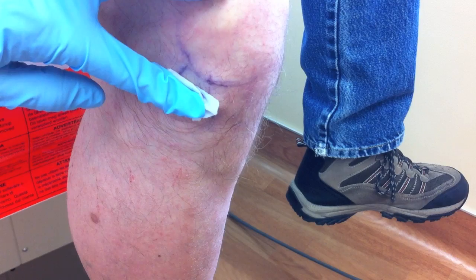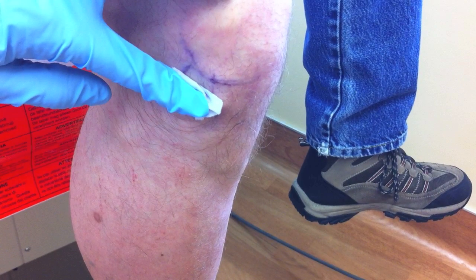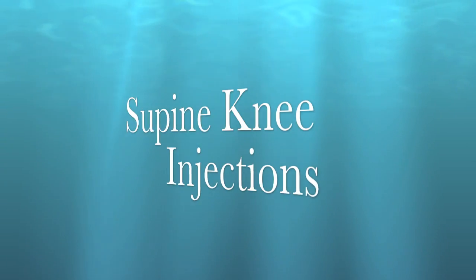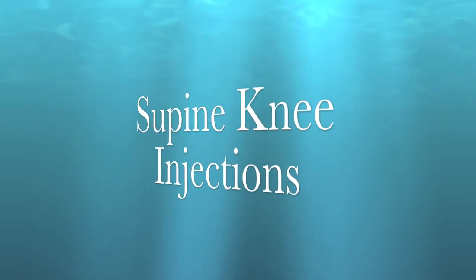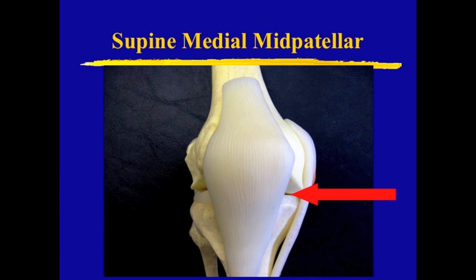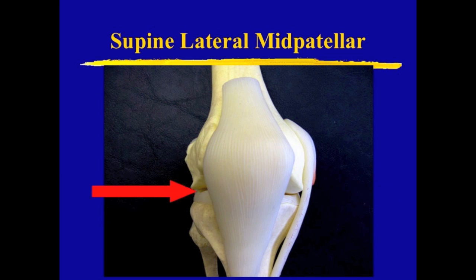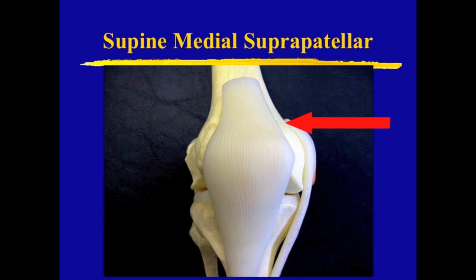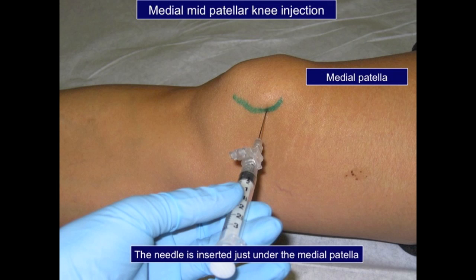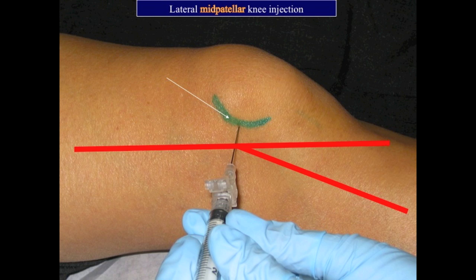Once the injection is done, withdraw the needle, cap your needle, dispose of your sharps, and apply gauze and a band-aid. For the supine approach, as mentioned in part two, you have many options: you can choose the mid-patellar approach either medial or lateral, or the suprapatellar approach either medial or lateral, and any of these approaches can be done in full extension or in slight flexion.